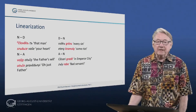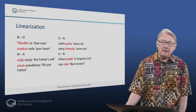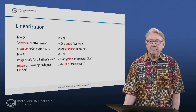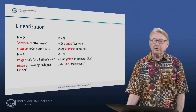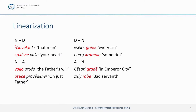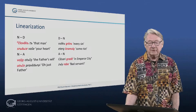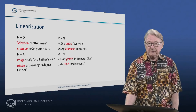OCS noun phrases are linearized, or serialized, according to their information structure. As a consequence, determinants can both precede and follow their nouns, and adjectives can both precede and follow the nouns they modify. All depends on how much information they add to a given situation.